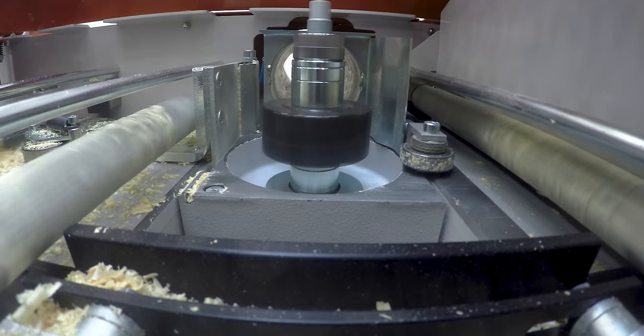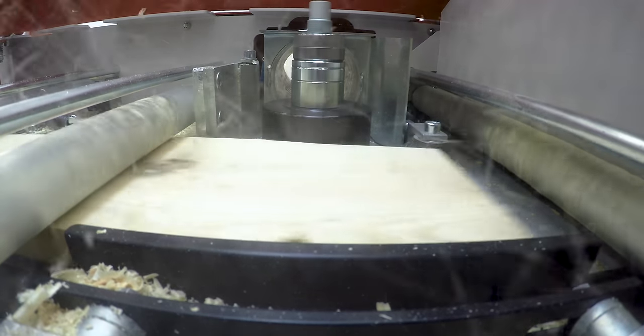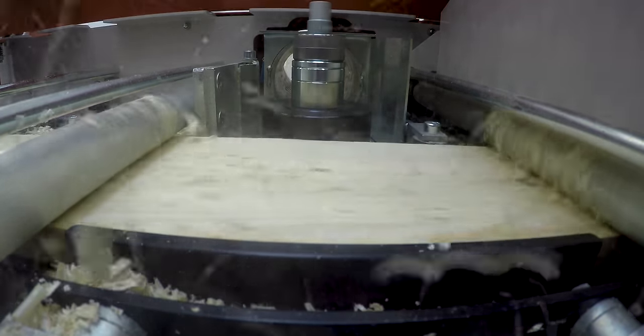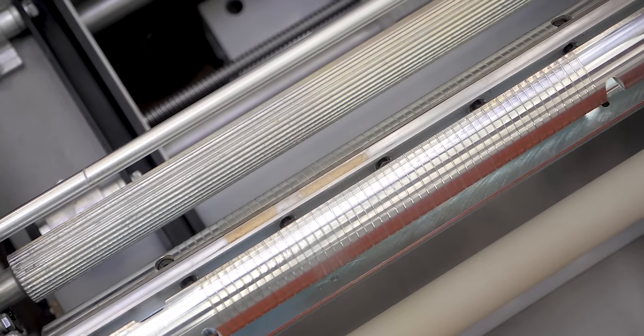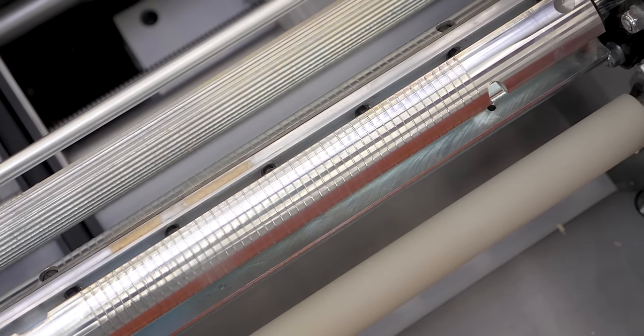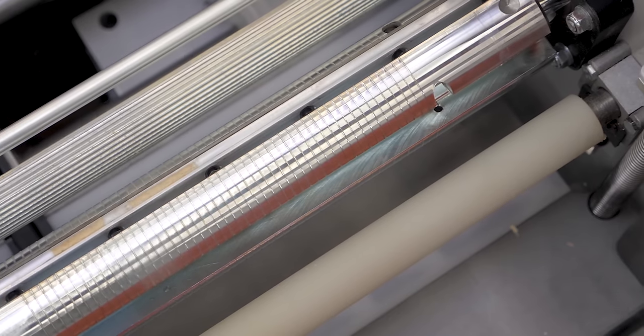The feed rollers press down on the board and move it through the machine. Even if the board is bowed, the feed rollers will hold it down flat, so you get a consistent profile from end to end. The first four rollers are made of steel, and the last roller is made of polyurethane, so that your finished profile isn't damaged.